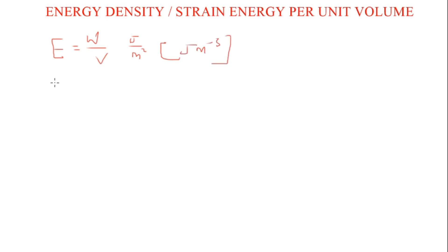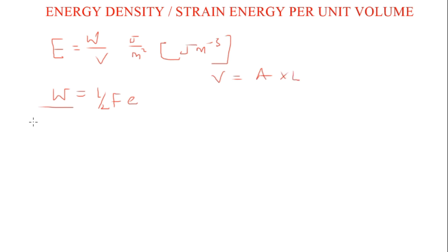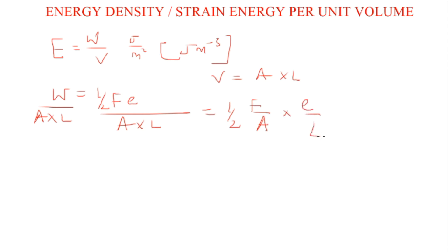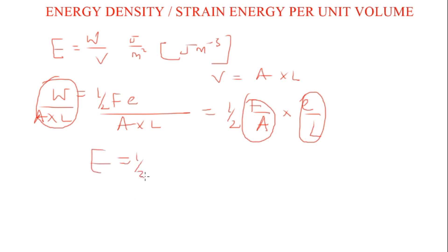To derive some other expressions relating energy density to stress and strain, recall that work done is given as half f times e, or half f times x, where e is the elongation. If we divide through by volume — which is area times length — we get half of f over area, all multiplied by extension over length. This should be familiar: work done over volume, which is the energy density, equals half of the stress multiplied by the strain.